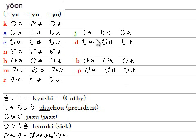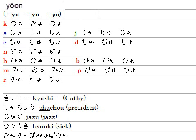There's another option for typing sha, shu, sho, cha, chu, cho, and ja, ju, jo. You can also type S-H-A instead of S-Y-A for sha. Let me show you — S-Y-A gives sha, but you can also type S-H-A for sha. So it's just another option to type sha.